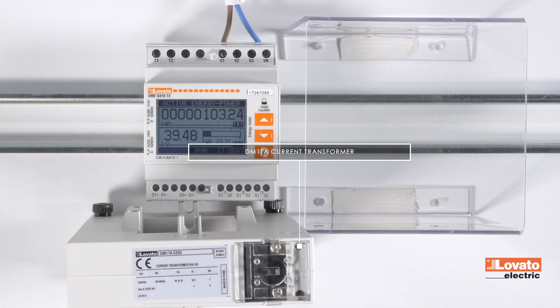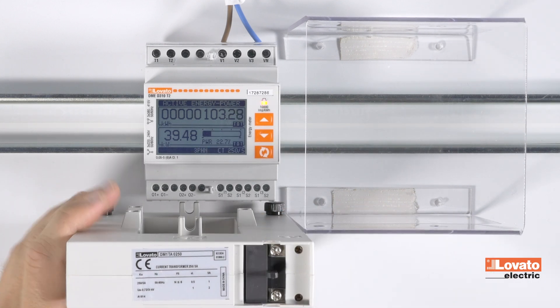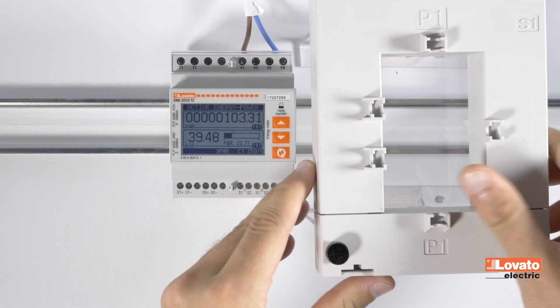The procedure with the openable CT series DM1TA is the same. First, remove the terminal covers and open the CT by removing the two screws.